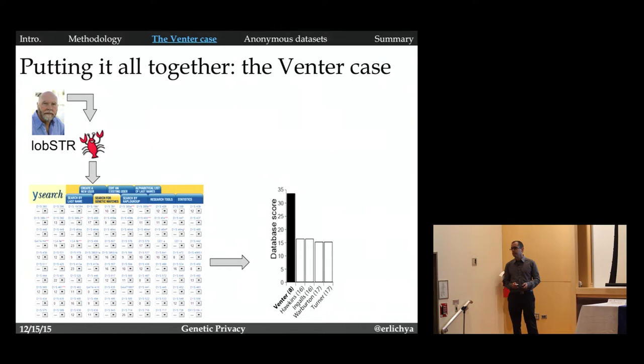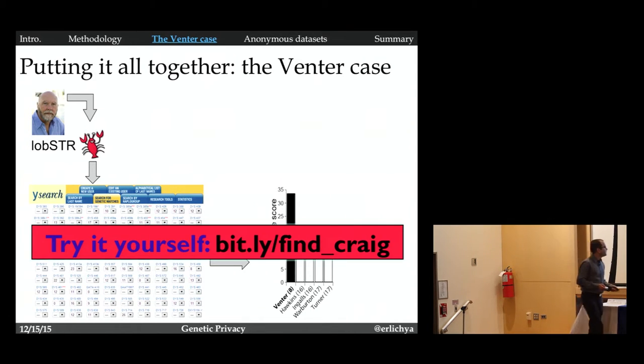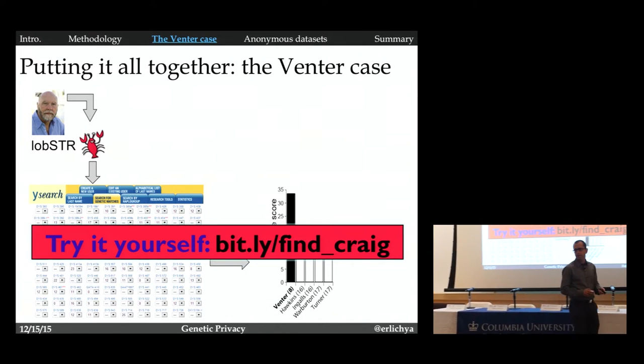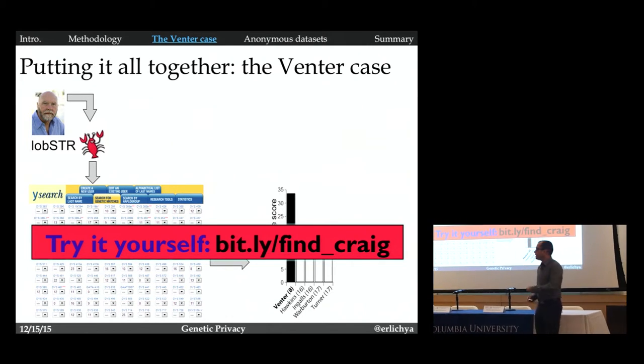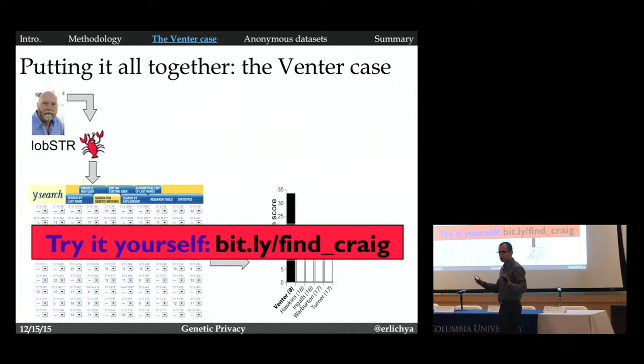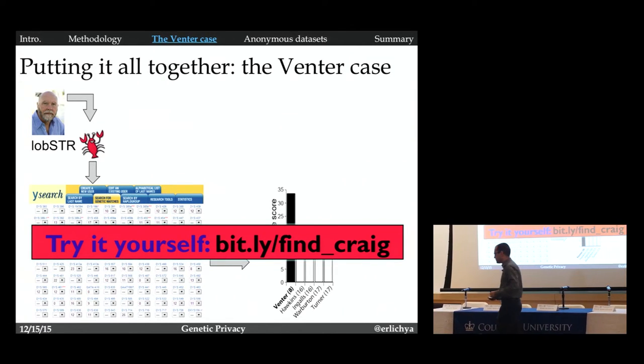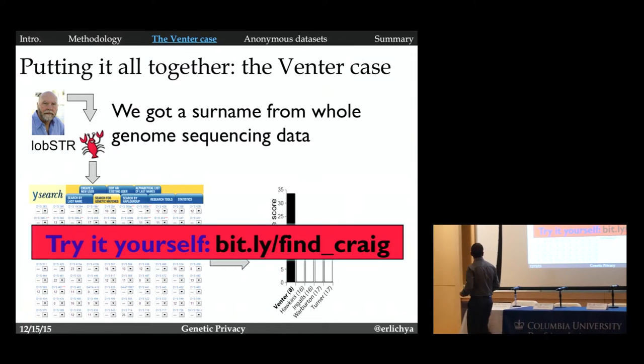Then we went to ysearch.org, to the search mechanism. Let me zoom in. For each marker, we just put the number of repeats that we identified. And then we clicked search. After a few seconds, this is what the database gave us. Venter was the top match. So you might want to replicate our own study. You can go to this link, bit.ly slash find Craig. This will redirect you to this search mechanism with all the alleles that we found in Craig Venter's Y chromosome. Click on the search button from your computer right now and see that you get Craig Venter. There are no tricks here. If you have an internet connection and some knowledge in genetics, you can do this process.